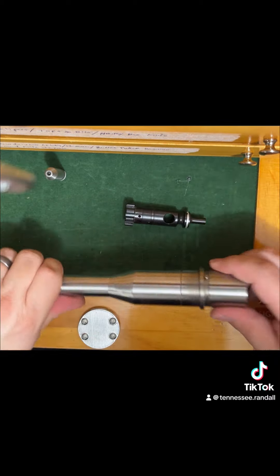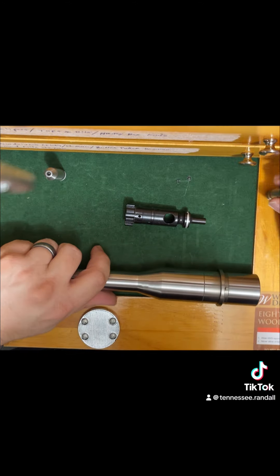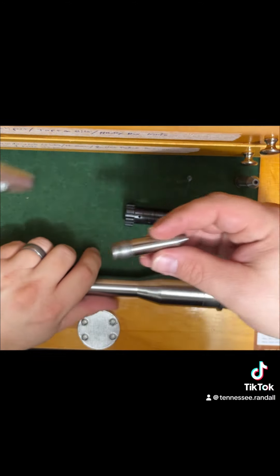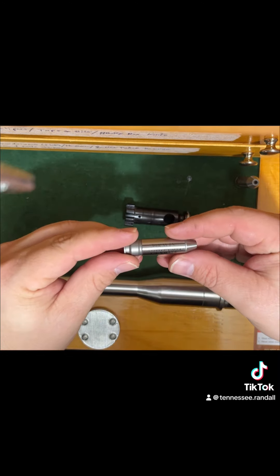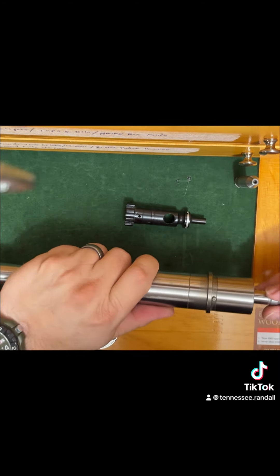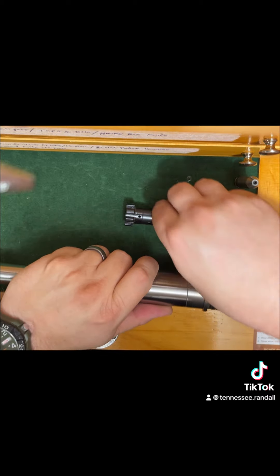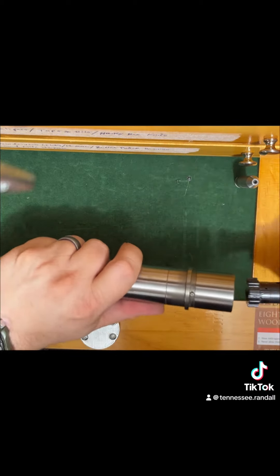This is the no-go gauge. So the bolt should not turn, or actually the lug should not even engage.